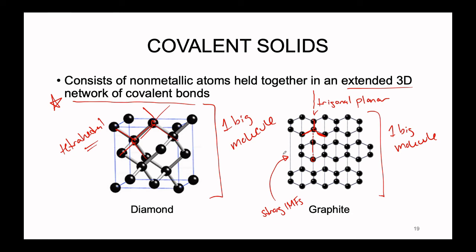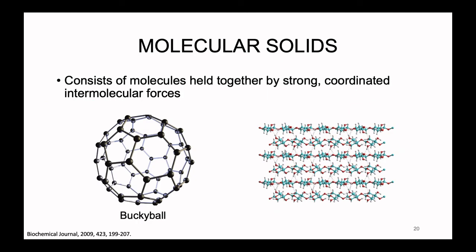Both of these structures form what we call covalent solids — they're both held together by an extended array of covalent bonds that could continue indefinitely so long as we have the material for it. The other form of a solid made up of nonmetals is what we call a molecular solid. This is going to consist specifically of molecules held together by strong coordinated intermolecular forces. In our previous example of nonmetals coming together, we had extended arrays of covalent bonds; here we have a limited number of covalent bonds but multiple discrete molecules.